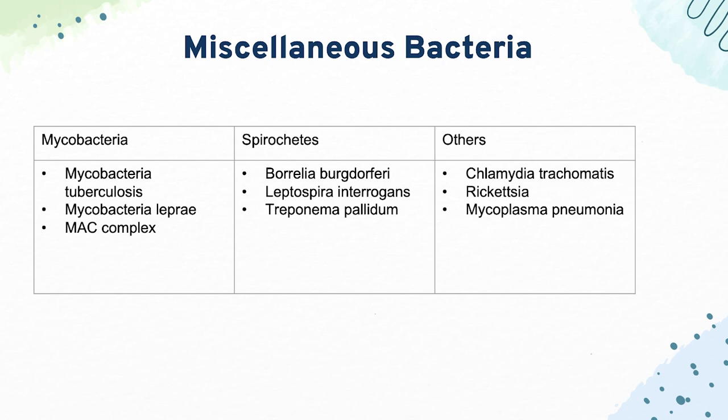For our miscellaneous bacteria, mycobacteria are a bit unusual because they are acid-fast. Then next we have our spirochetes. Borrelia burgdorferi causes Lyme disease. Leptospira interrogans often infects patients from animal urine-contaminated water and can affect the spleen and liver. And Treponema pallidum causes syphilis.